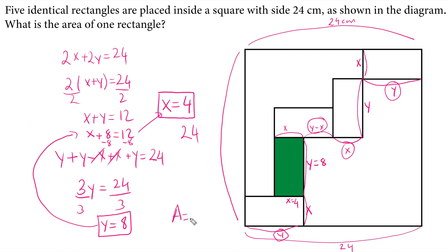The area of that green rectangle and all identical, they are all the same size rectangle. It will be 4 times 8. And then it will be 32 square centimeter. This is our solution.